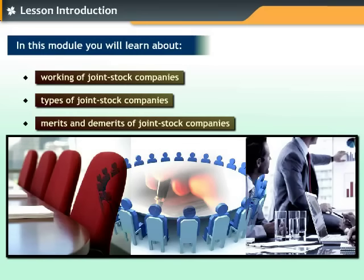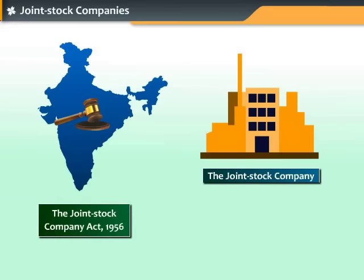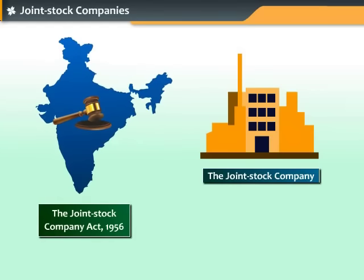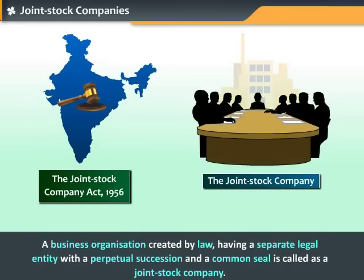In this module, you will learn about Joint Stock Companies, their types, their merits and demerits. The Joint Stock Companies Act was enforced in India in 1956. According to this act, a Joint Stock Company is defined as a business organization created by law, having a separate legal entity, with a perpetual succession and a common seal.